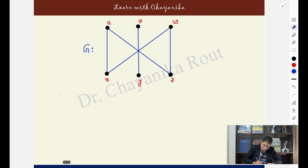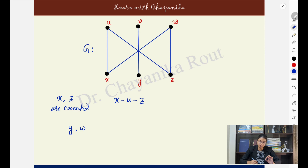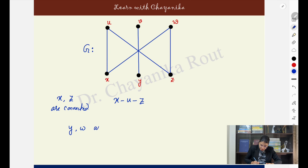In this particular graph, if I talk about vertices x and z, you can travel from x to u, then u to z — that creates a path between x and z, which means x and z are connected vertices. Now what about vertices y and w? In this graph there is no way to travel from vertex y to vertex w by traversing the edges, because there is no path between these two vertices.